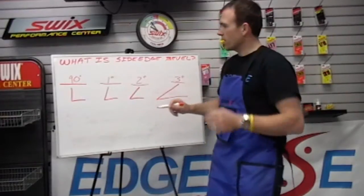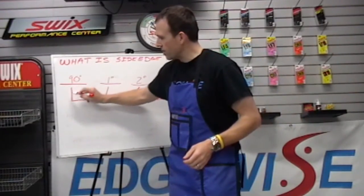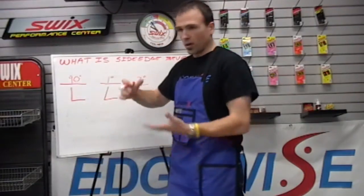Side edge bevel is going to be the relationship of the edge material on the side of the ski when you sharpen it.